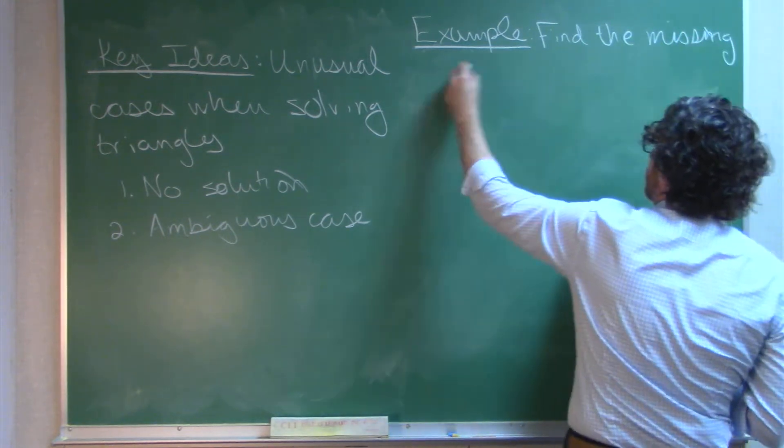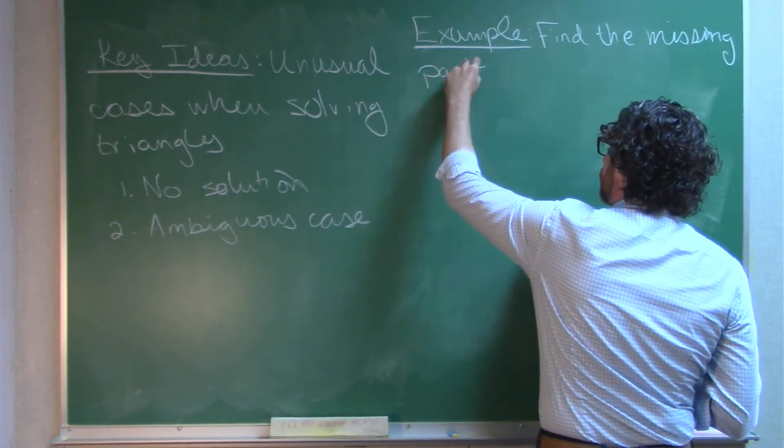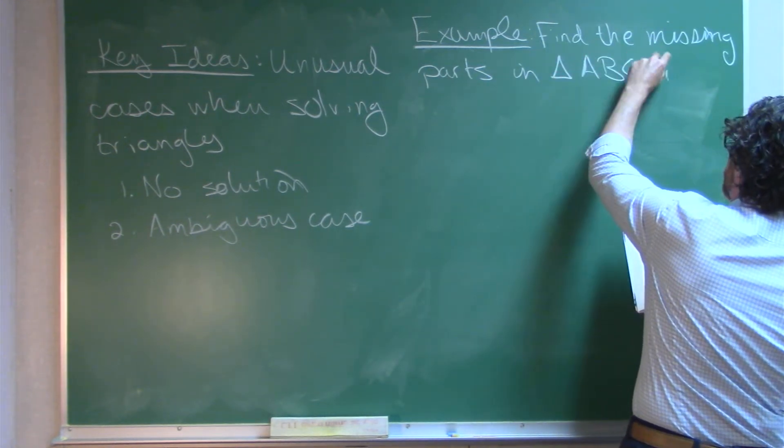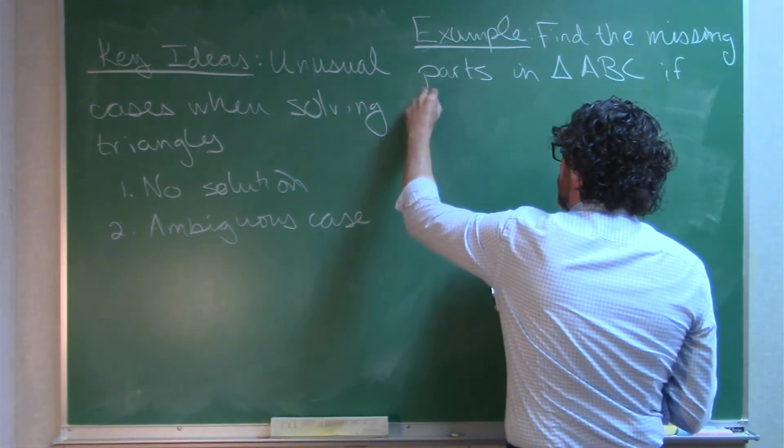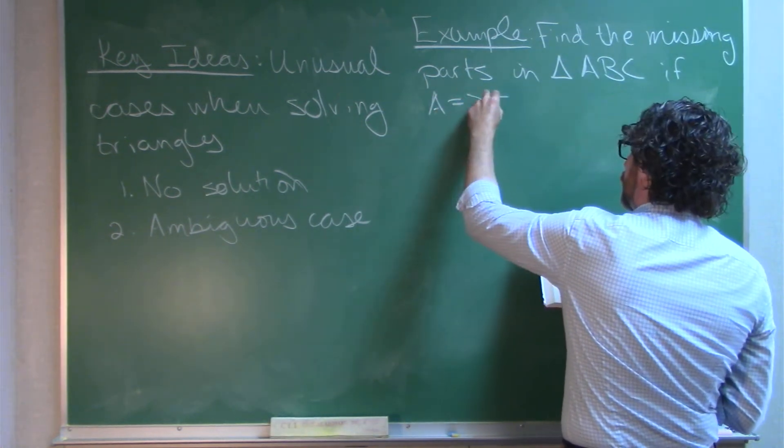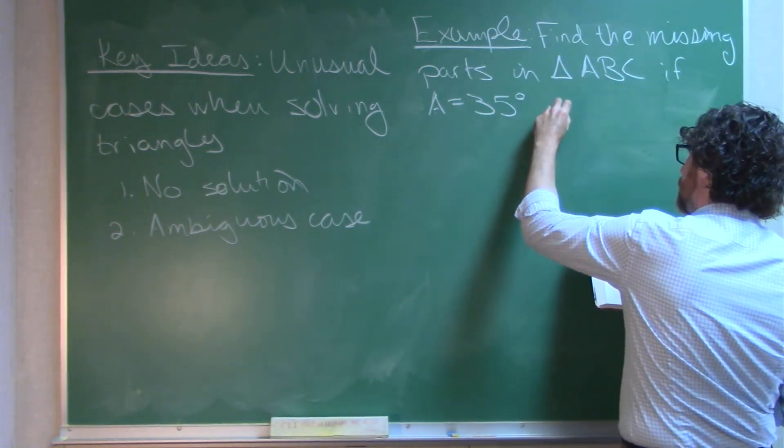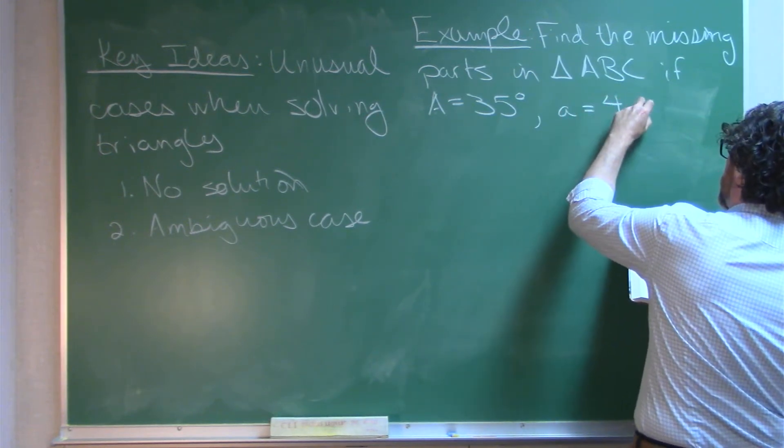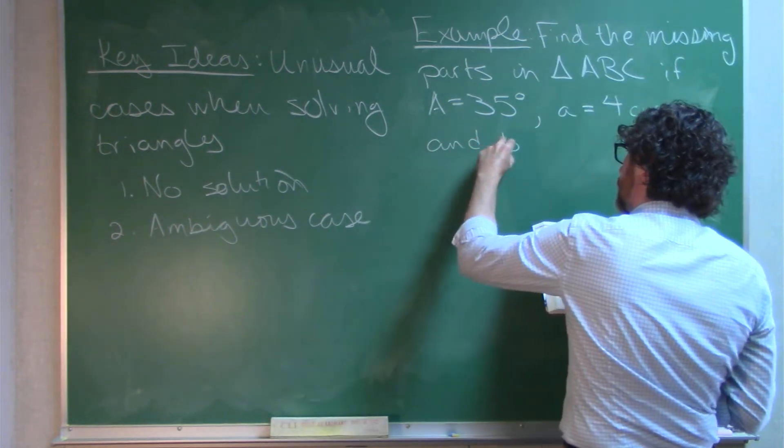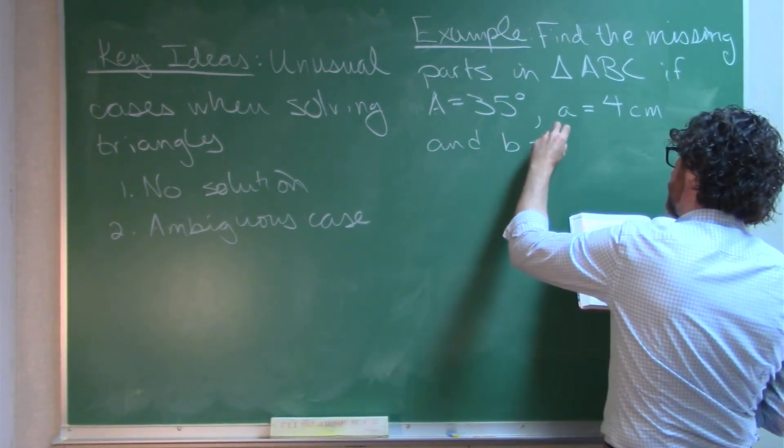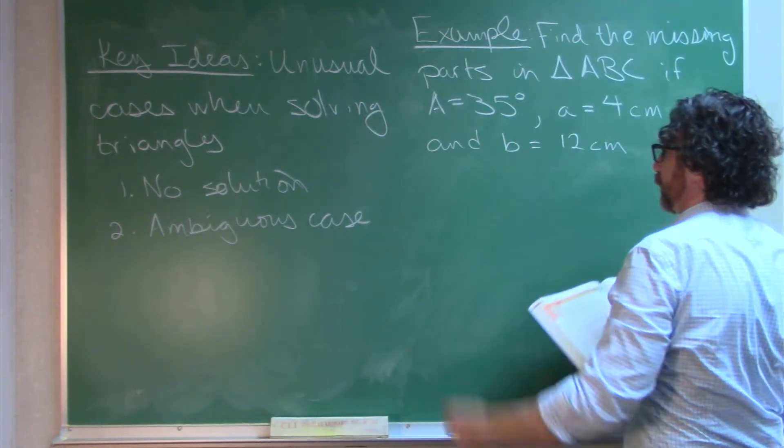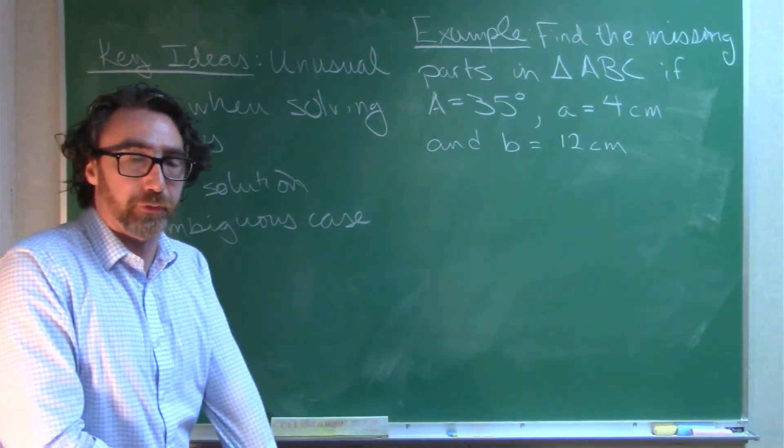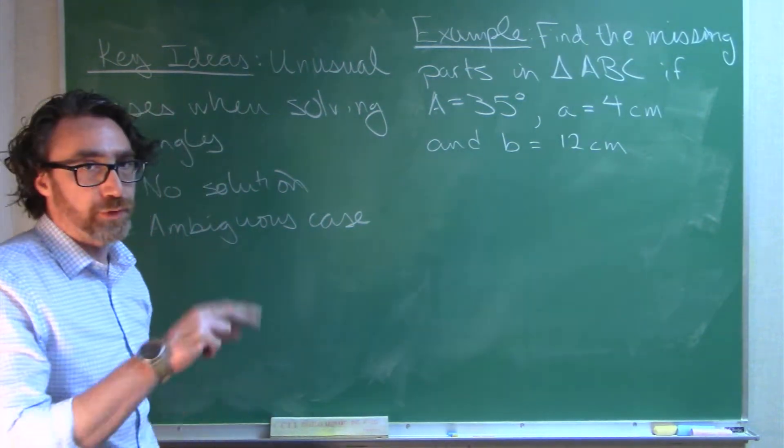Find the missing parts in triangle ABC if angle A equals 35 degrees, side A equals 4 centimeters, and side B equals 12 centimeters. Okay, so we've been given one of the three angles and two sides.